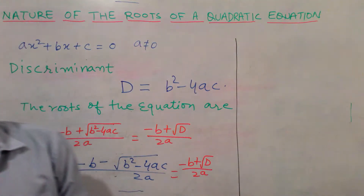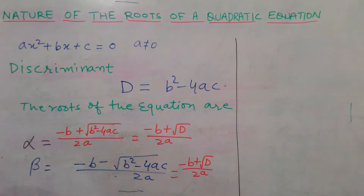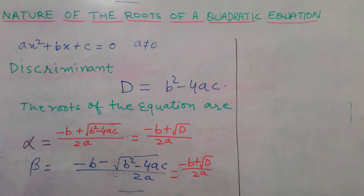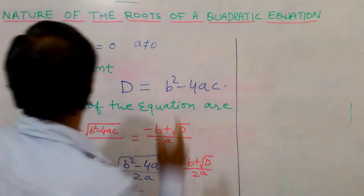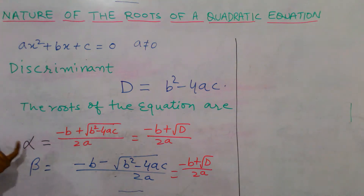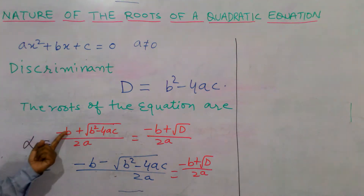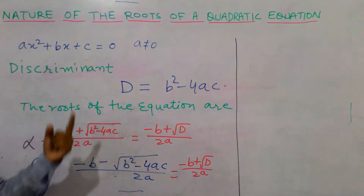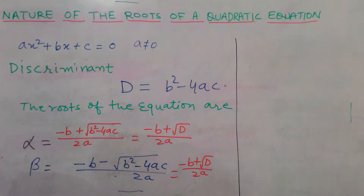Let us assume the quadratic equation is ax² + bx + c = 0, where a is not equal to 0. When you solve it, you get the two roots: alpha is equal to (-b ± √(b² - 4ac)) / 2a.